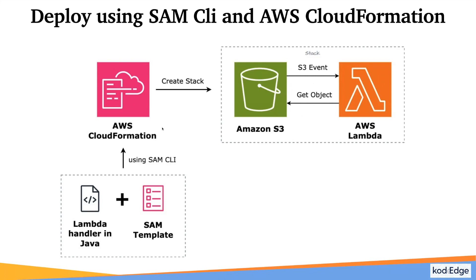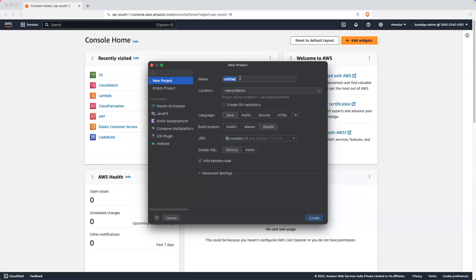We will create this configuration using AWS CloudFormation. For that we will create a handler in Java and we will create a SAM template, and we will deploy it using SAM CLI. This template is going to be used by AWS CloudFormation — it will create a stack, and in the stack it will create an S3 bucket, the Lambda function, and the event configuration in the S3 bucket. I have already created a video on how to do the same configuration manually from the AWS console, so I will attach that link in the video description.